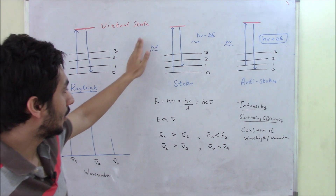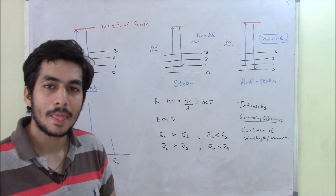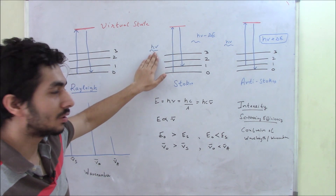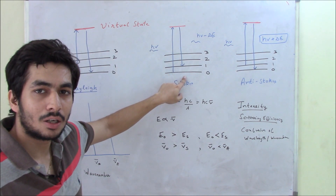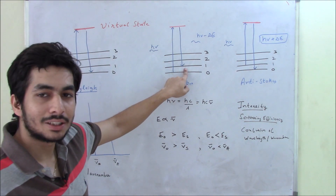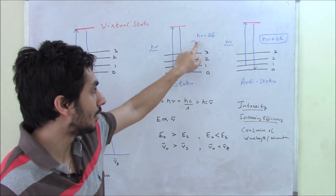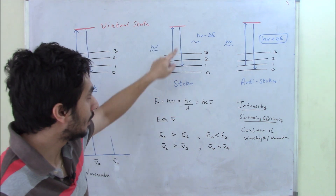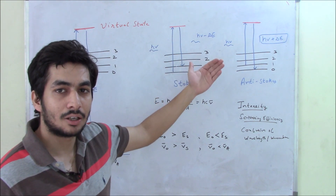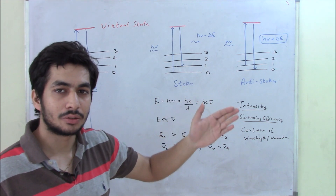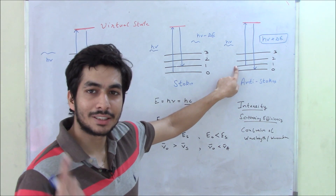If the incident photon and the scattered photon are not of the same energy, it's called inelastic scattering. There are two cases: one gives rise to the Stokes line and one to the Anti-Stokes line. In Stokes scattering, a photon interacts with the molecule from the ground state, it gets excited to the virtual state, but instead of returning to the ground state it returns to the first excited state. So the scattered photon has less energy than the incident photon, giving rise to the Stokes line.